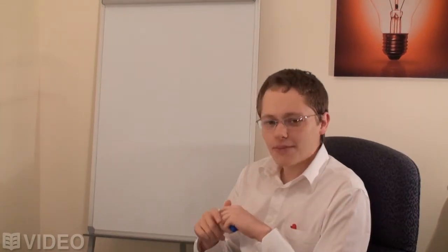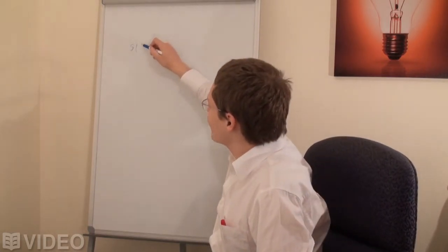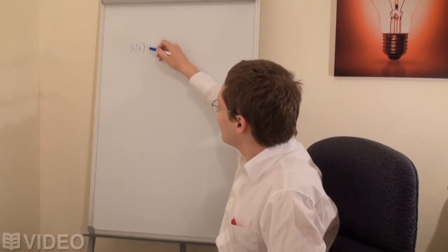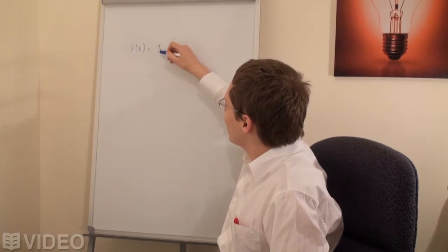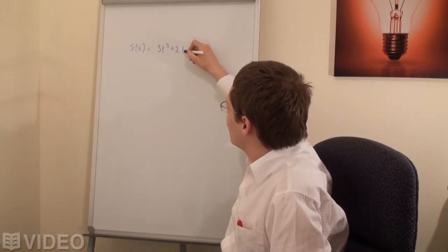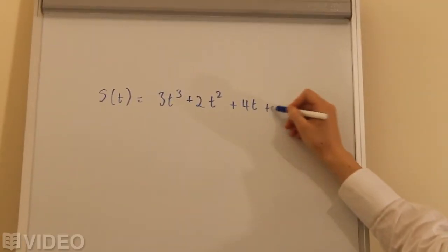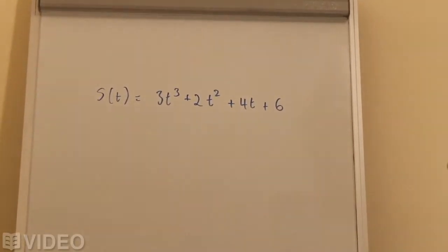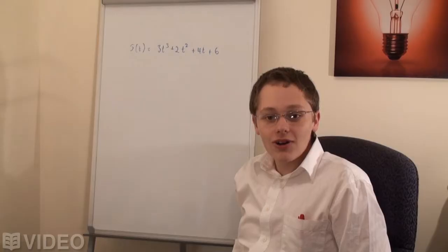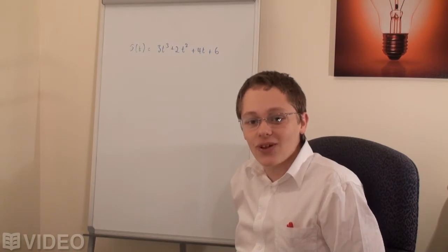Let's suppose we had the displacement-time function: s(t) = 3t³ + 2t² + 4t + 6. We already know the velocity and acceleration functions for this.